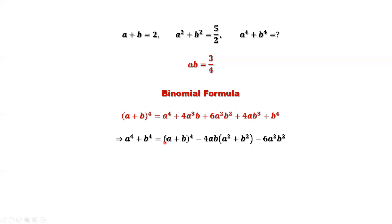So from the right hand side, what do we need to calculate the final result for a to the power 4 plus b to the power 4? We need a plus b, we have here that's 2. ab, we have 3/4. a squared plus b squared, we have 5 halves here. 6ab squared, ab we have 3/4. So just plug in those results into the right hand side.